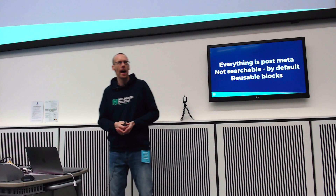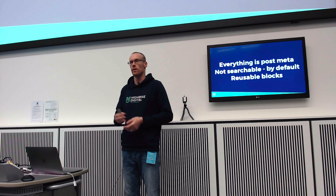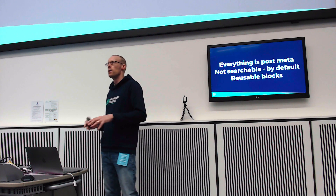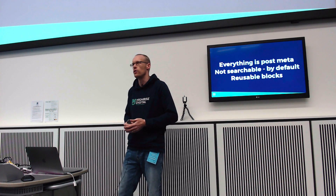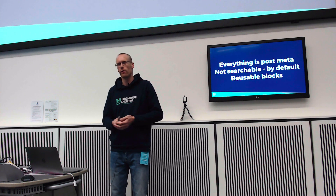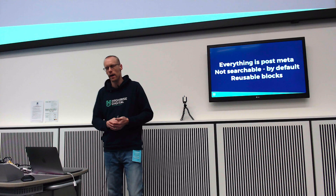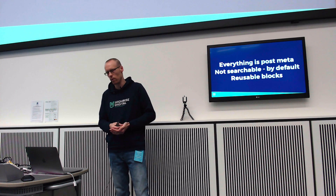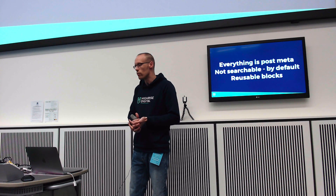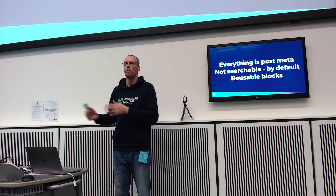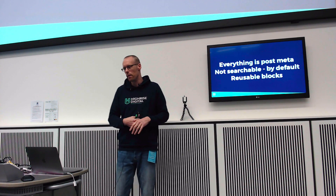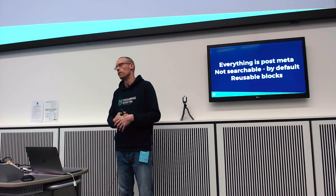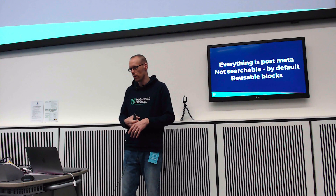Everything with ACF is post meta — it's not actually the content of the post, which is not ideal. Gutenberg has fixed that. This also means it's not searchable by default because WordPress doesn't search post meta by default. There are plugins and code snippets that can fix that. We also wanted reusable blocks — Gutenberg does this very well, allowing you to save a block and use it on another page with edits propagating everywhere. We're actually building that into the plugin right now; it's pretty much built and just needs testing.